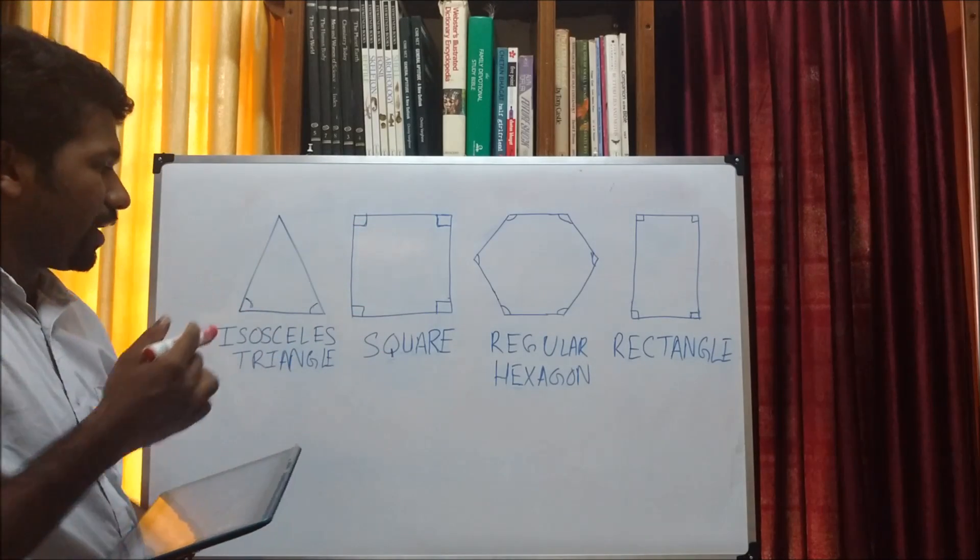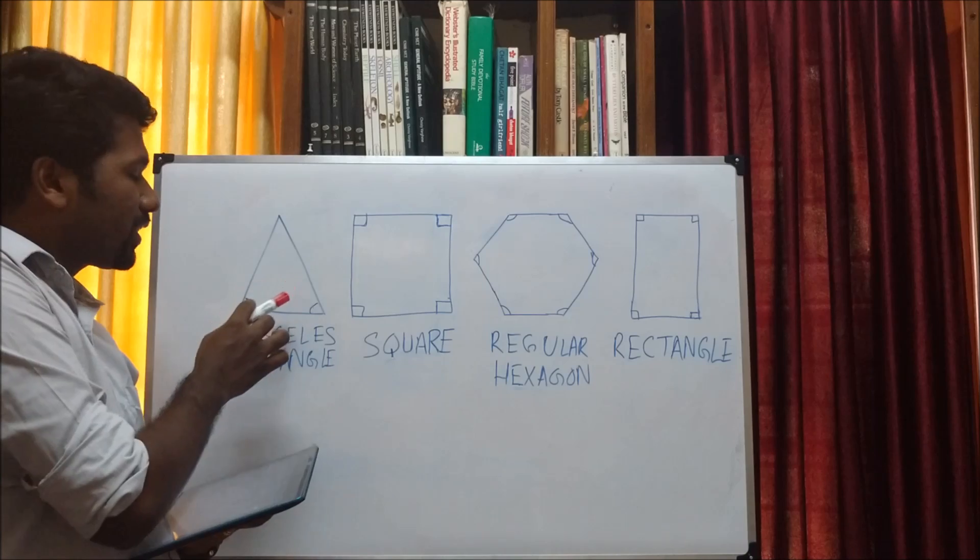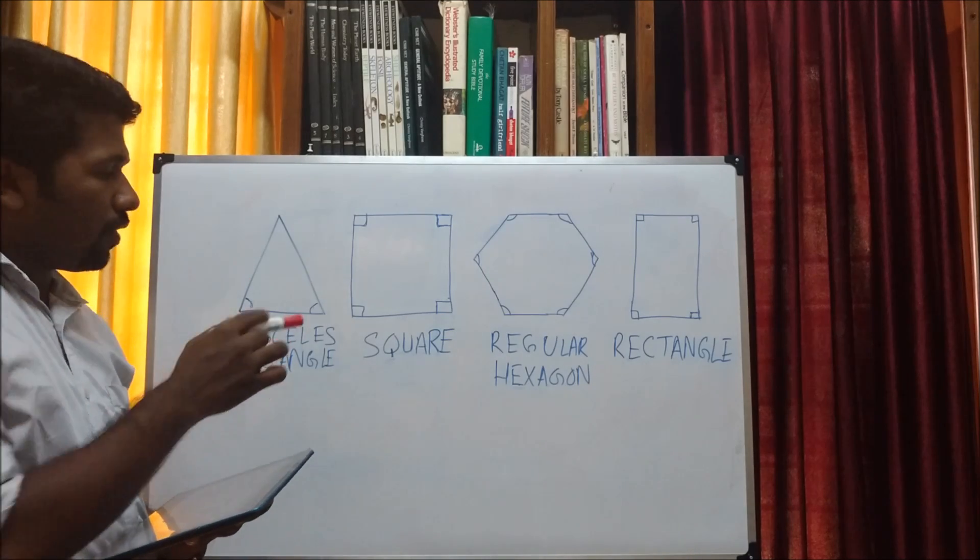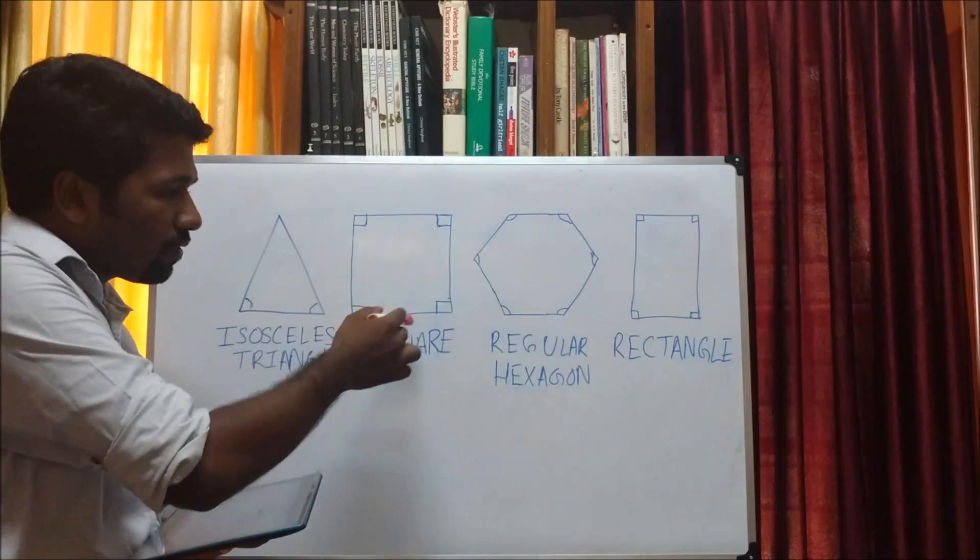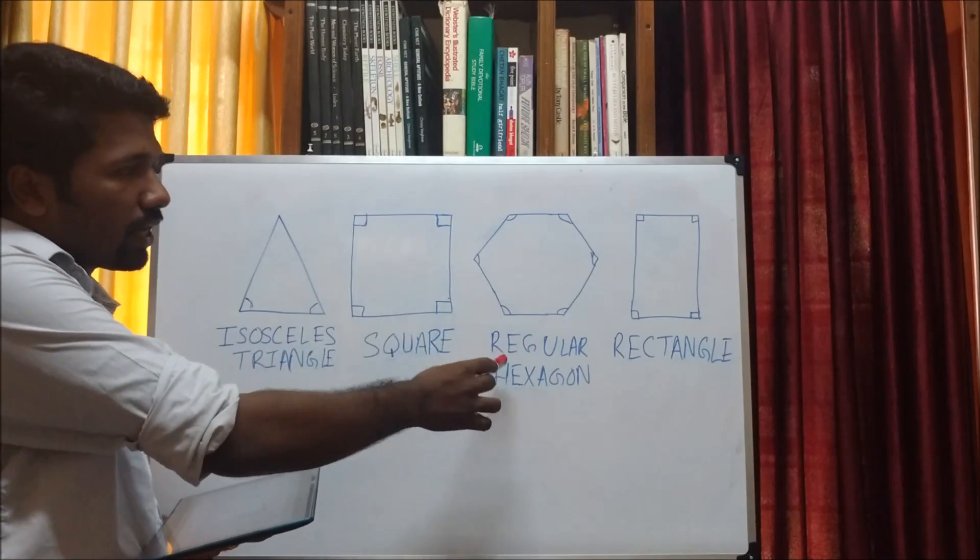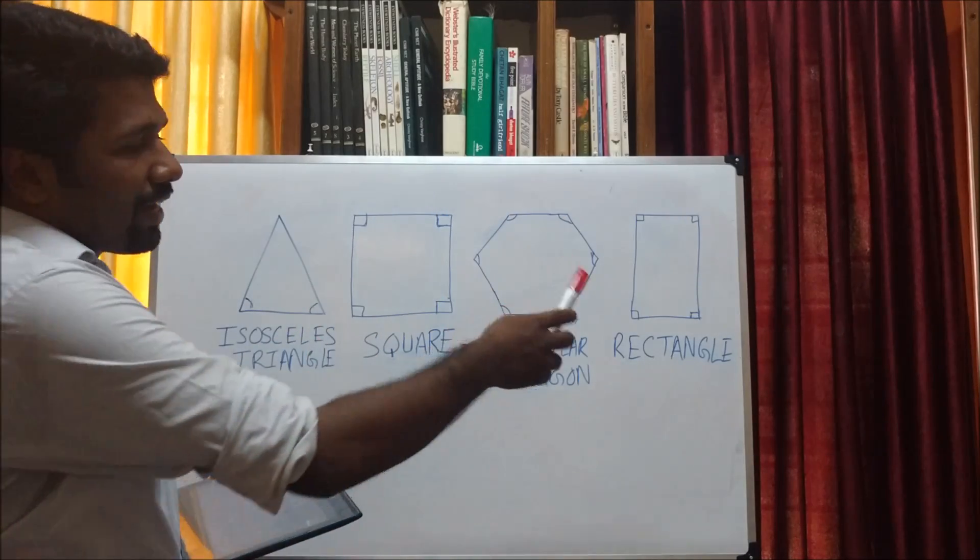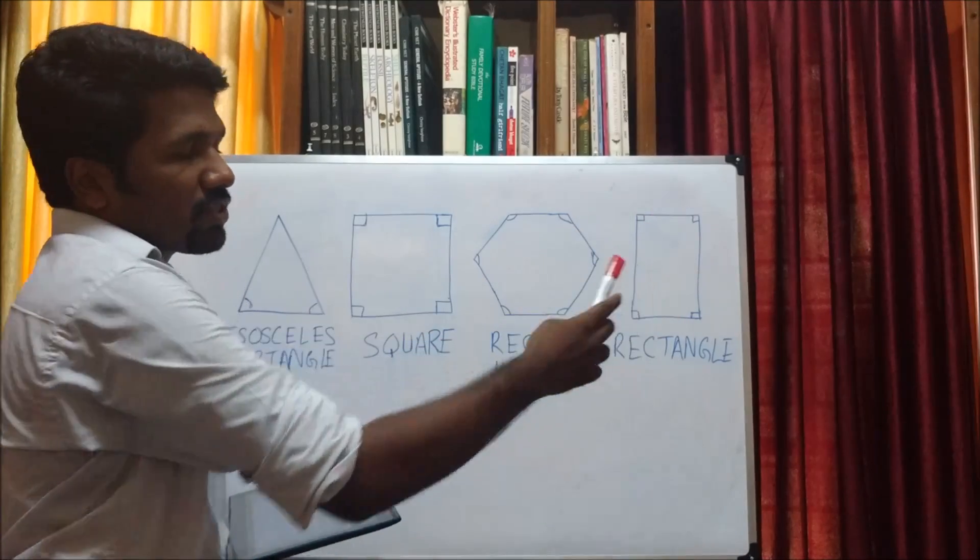For an isosceles triangle, two of its sides will be equal and the third side will be different. For a square, all its sides will be equal, and for a regular hexagon, again all of its sides will be equal. For a rectangle, only the opposite sides will be equal.